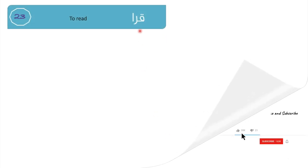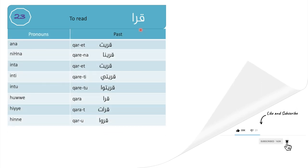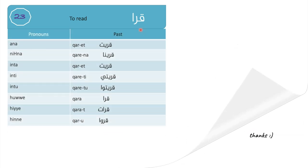Our second verb is 'ara', which means to read. 'Ara' is a defective verb — a final weak Arabic verb. When you conjugate it with first and second person, the aleph gets replaced with a ya, then you add your conjugation. However, the aleph with the third person comes back again but gets deleted with 'they'. Ana riit. Nihna riina. Enta riit.